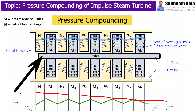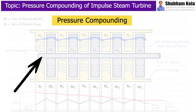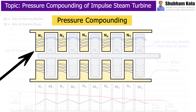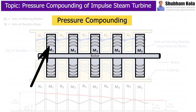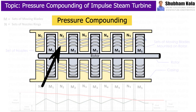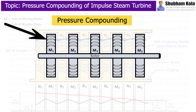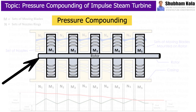The pressure compounded steam turbine consists of a number of fixed nozzles which are placed between moving blades, which means rings of moving blades are separated by rings of fixed nozzles. The moving blades are carried on the same shaft in series.